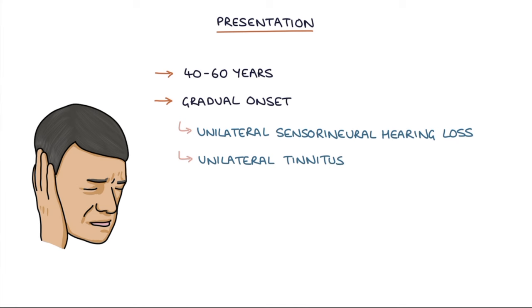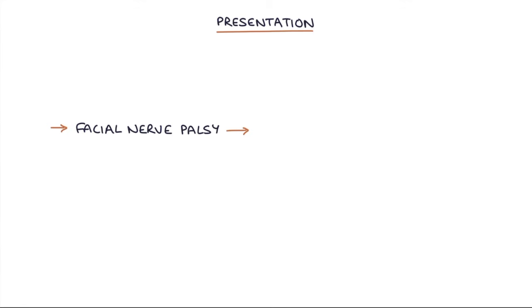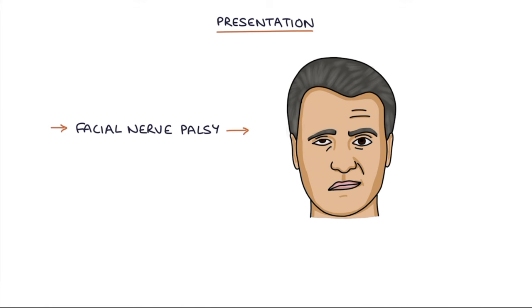Unilateral tinnitus, which is a ringing or an extra sound in the ear, dizziness or imbalance, and a sensation of fullness in the ear. They can also be associated with a facial nerve palsy if the tumour grows large enough to compress the facial nerve.